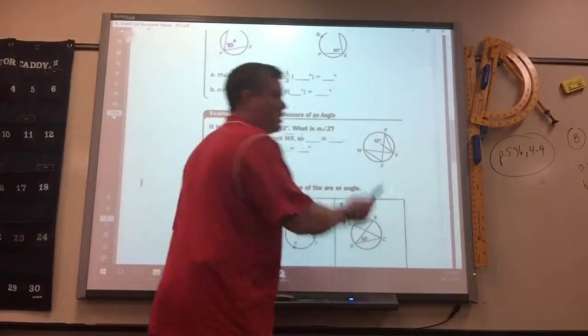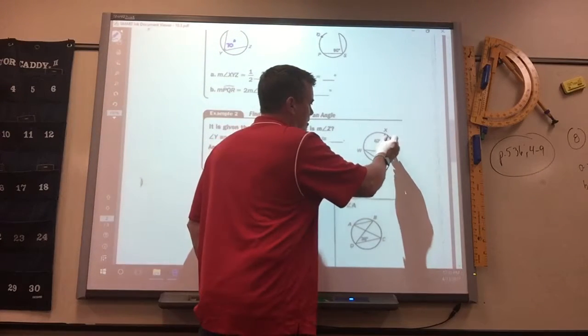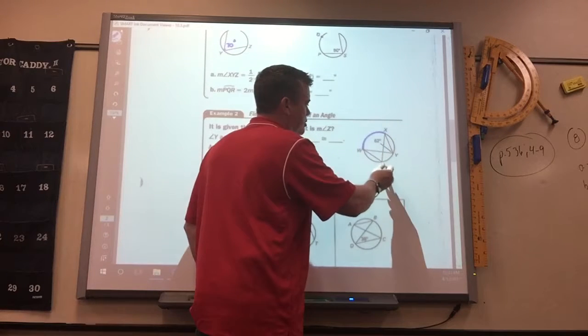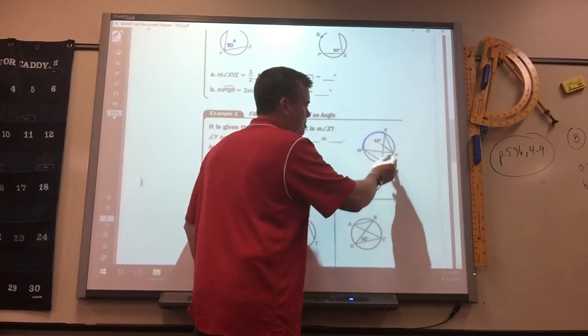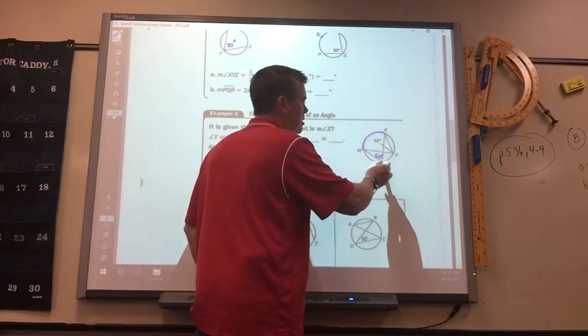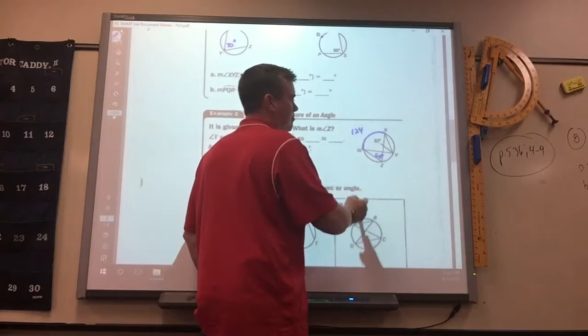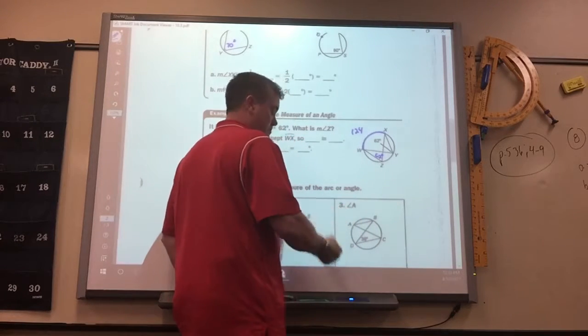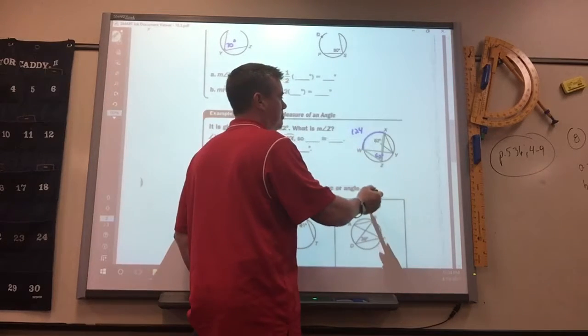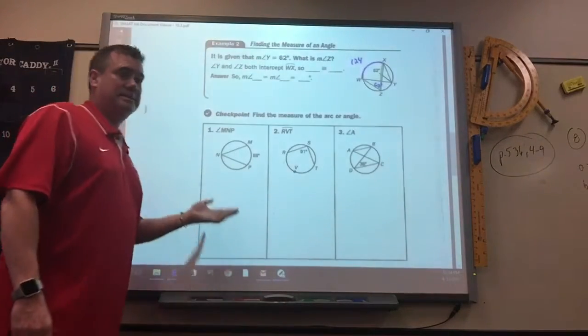So this is the one that, the example before, where it gets a little confusing. But if you notice, angle Y intersects from there to there, and so does angle Z. Which means these are both 62, and it means the arc is 124. Okay? Everyone got that?